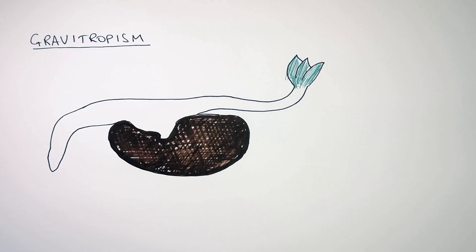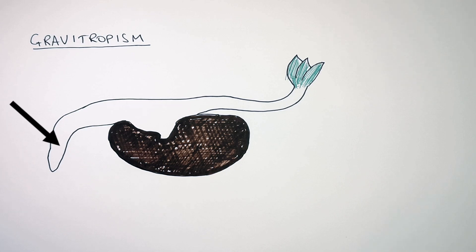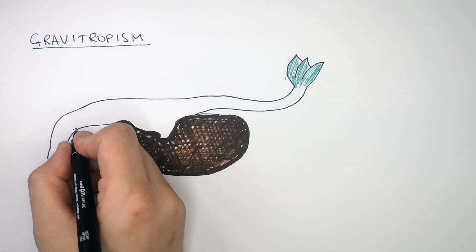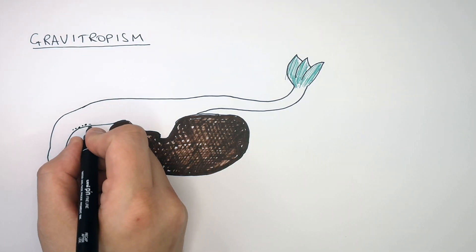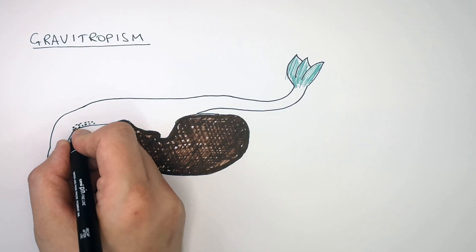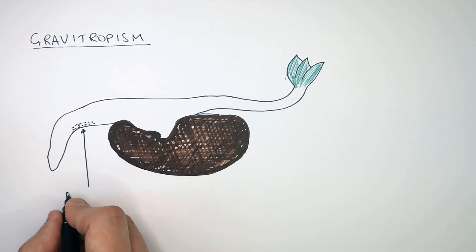When a seed germinates, the shoot where the leaves are needs to grow upwards towards light, but the roots need to grow downwards towards moisture and minerals. Gravitropism is when auxins fall to the bottom of the root due to gravity.